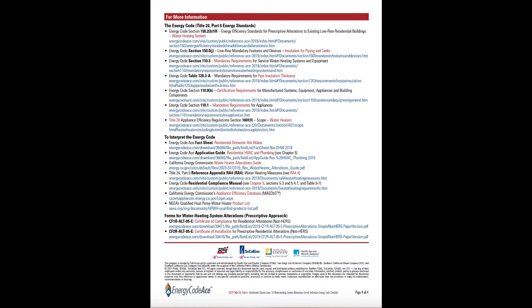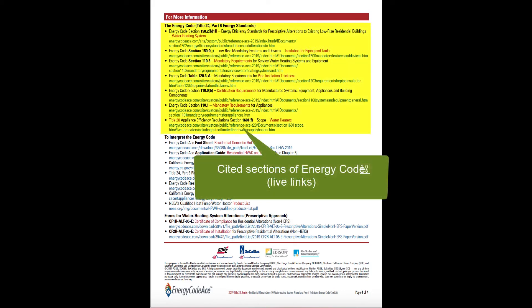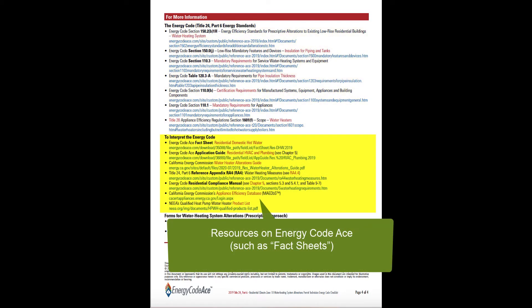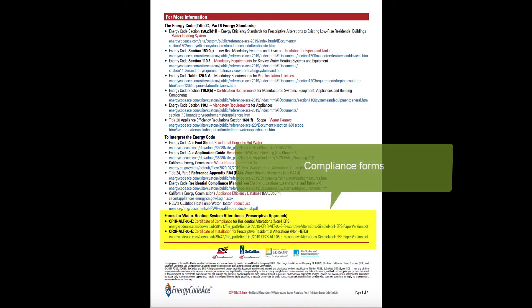Types of resources listed on page 4 include cited sections of energy code, applicable resources on Energy Code ACE such as fact sheets, and compliance forms.